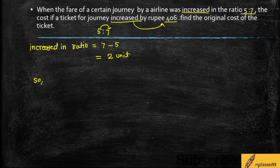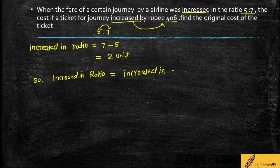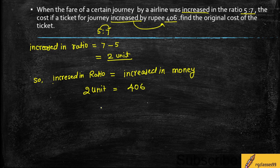So here we can say that the increase in ratio is equal to the increase in money, i.e., increase in Rupees. The ratio increased by 2 units, and the money increased by Rs. 406. So we calculate 406 divided by 2.